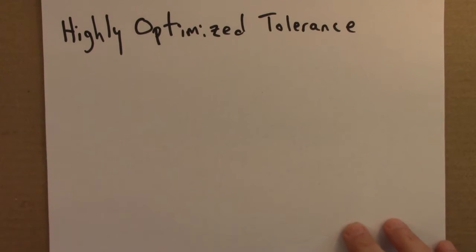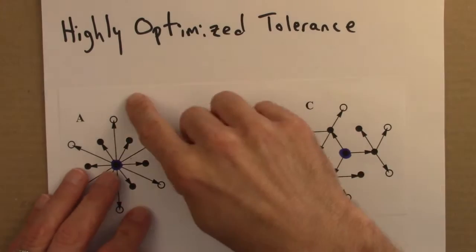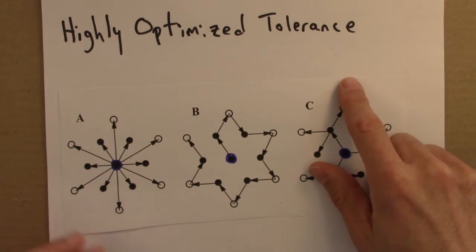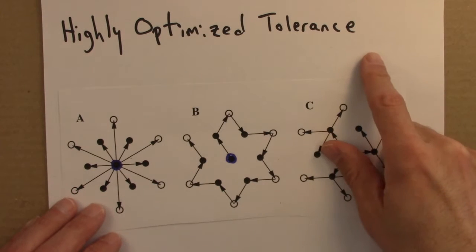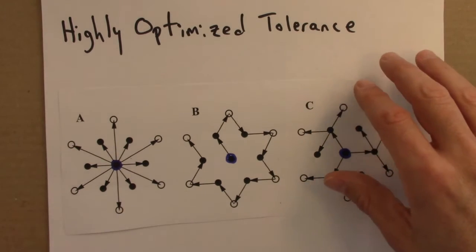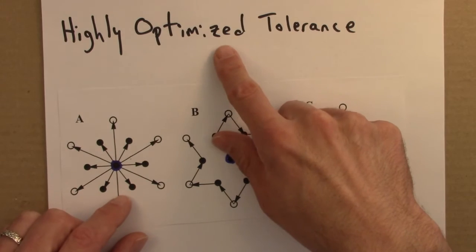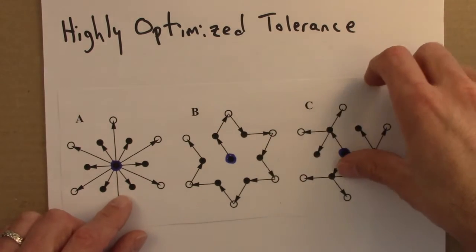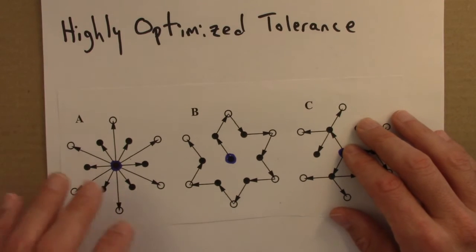The distribution network example that I just described is an example of a more general idea or phenomenon known as highly optimized tolerance. Highly optimized tolerance refers to a class of models for generating power laws put forth I think first by Gene Carlson and John Doyle. I'll put references in the additional resources section.